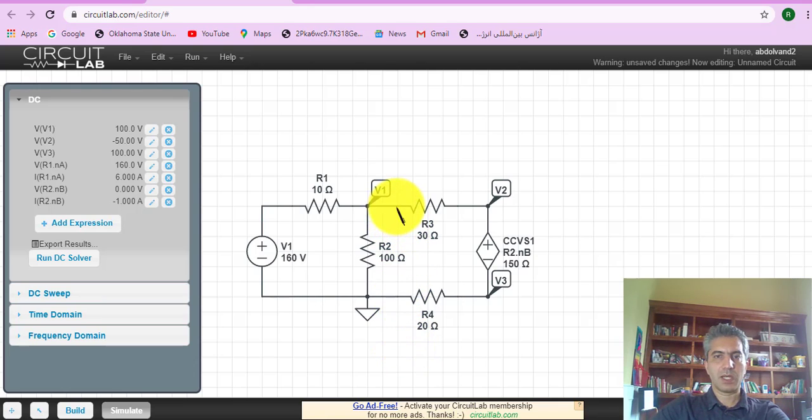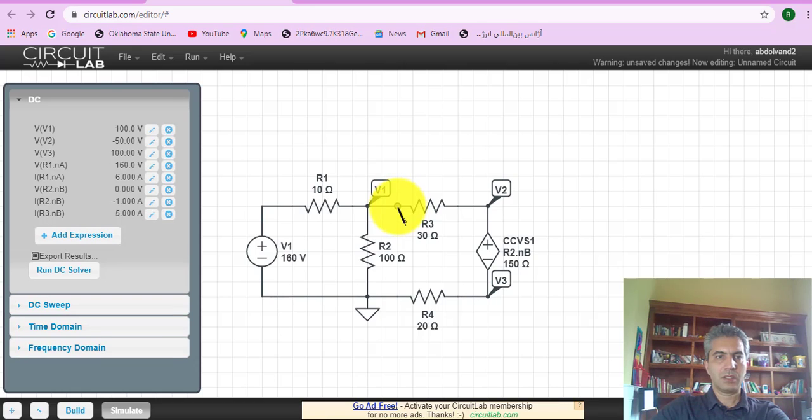So one last one. Let's click here and it gives you the current that goes into resistor 3 as being 5 amps, and these are all the same values that we calculated using our methodology.